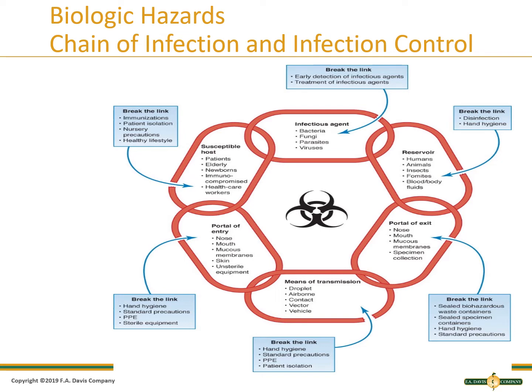Portal of entry is how the infectious agent gets into your body — through your nose by breathing, mouth by eating something, mucous membranes, or skin if you get a cut. Using unsterile equipment would also be a risk, though of course we wouldn't do that. To break this link: hand hygiene, standard precautions, personal protective equipment, and sterile equipment.